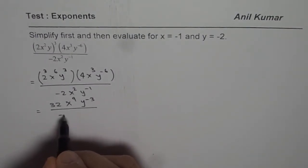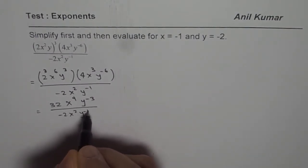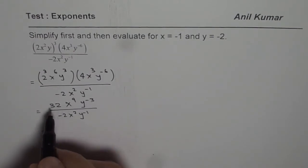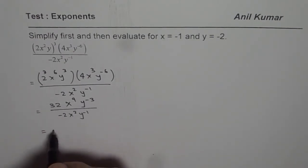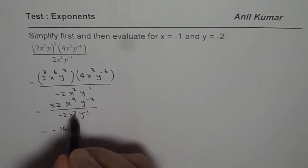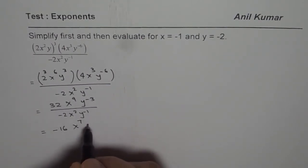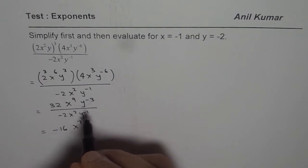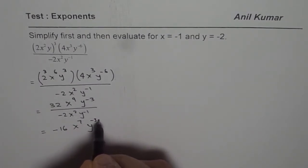And the denominator we have 2x square y to the power of minus 1. So dividing 32 by minus 2 gives us minus 16. x 9 minus 2 gives us 7. y minus 3 minus of minus 1, that means it is minus 3 plus 1.